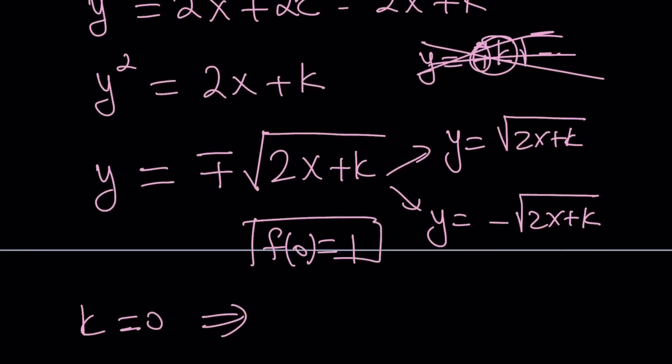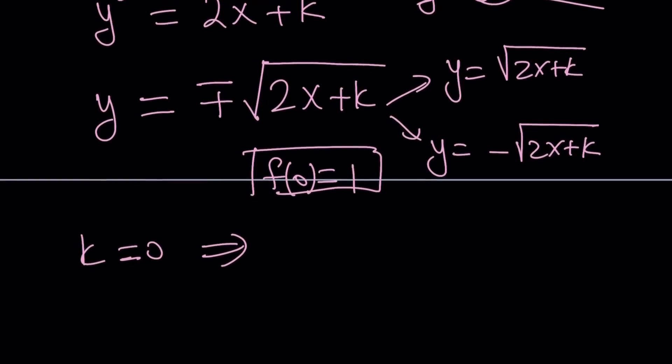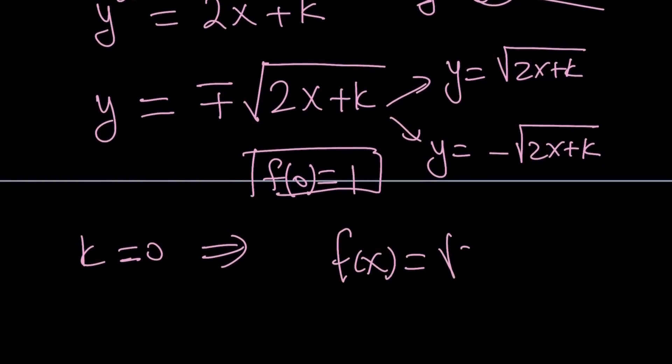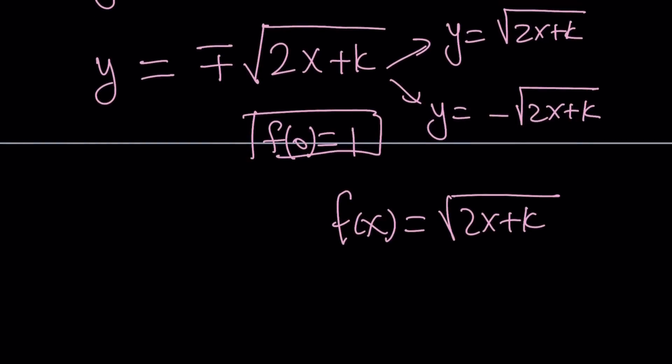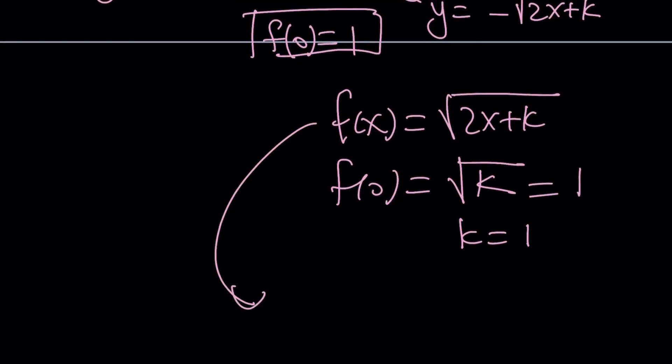We don't have that but if we did what you would do is you would say hey, f of x is equal to the square root of 2x plus k in the first case scenario and let's just forget about k equals 0 for now. I don't want to confuse you. And now f of 0 is going to be the square root of k and if this is 1 that means k is equal to 1 and then plugging it back in would give us f of x equals square root of 2x plus 1. And that will be the solution, the particular solution for this initial value.